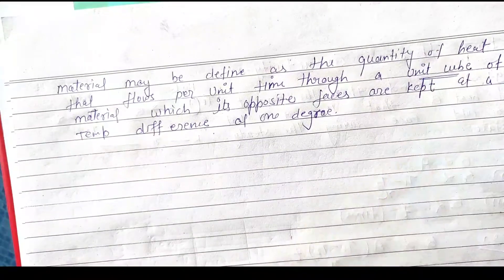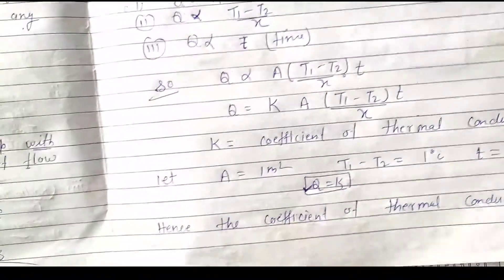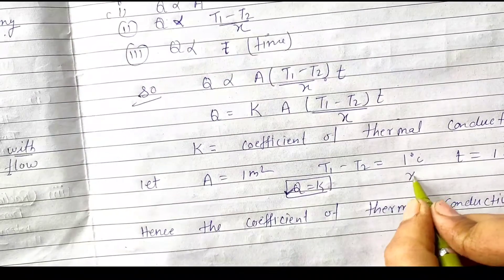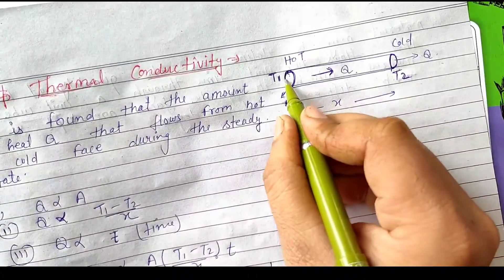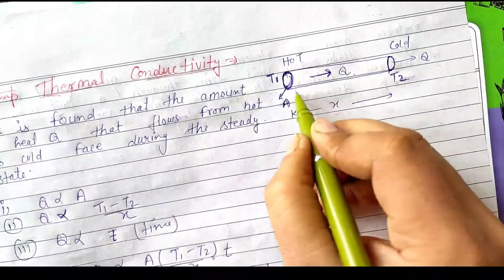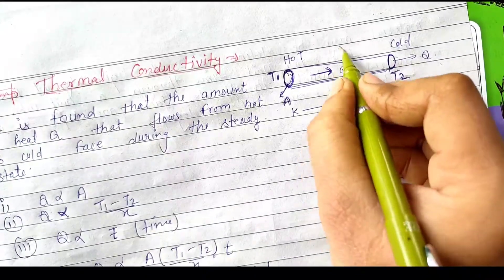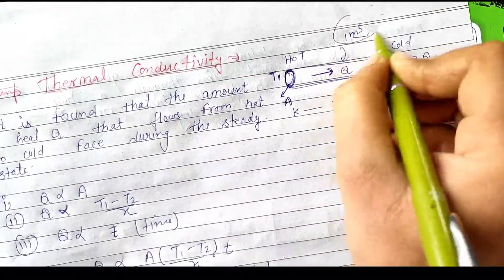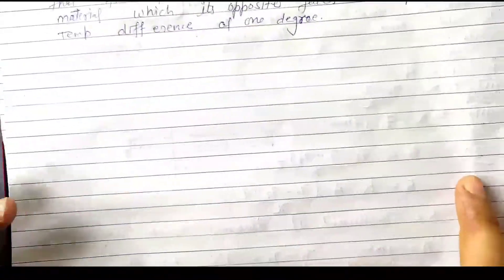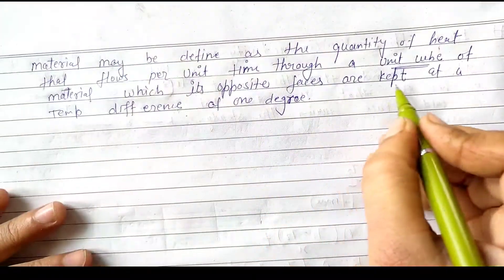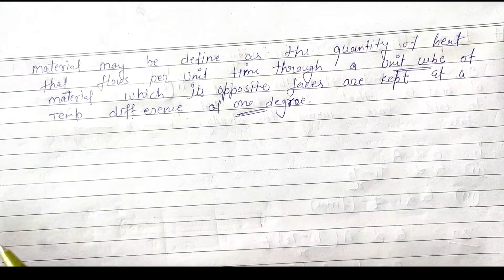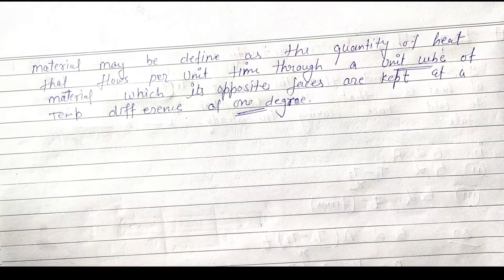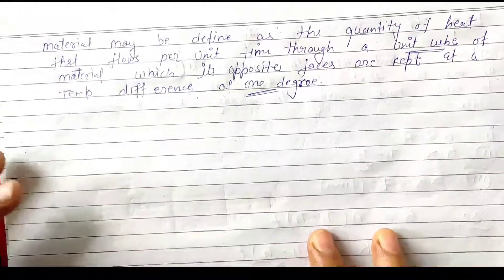A unit cube means length equals 1 meter, cross-sectional area 1 meter square, and length 1 meter, so total volume is 1 meter cube. Per second, if the heat is transferred between the two phases with a temperature difference of 1 degree, then the amount of heat transferred is equal to the coefficient of thermal conductivity.